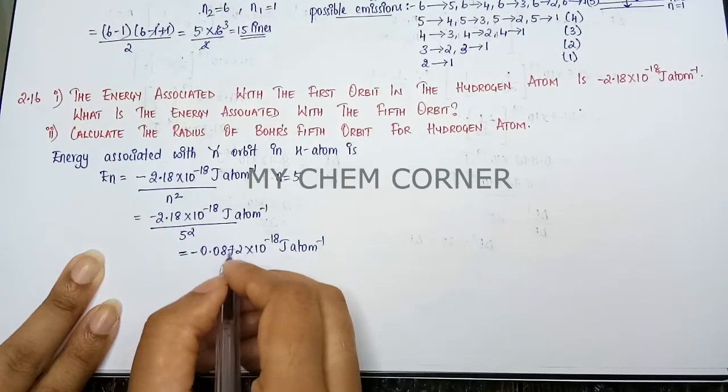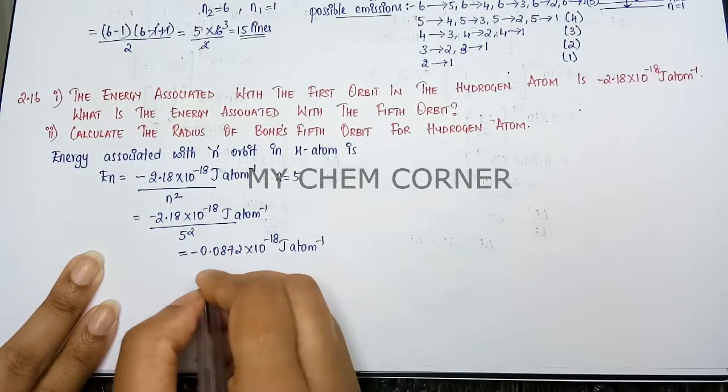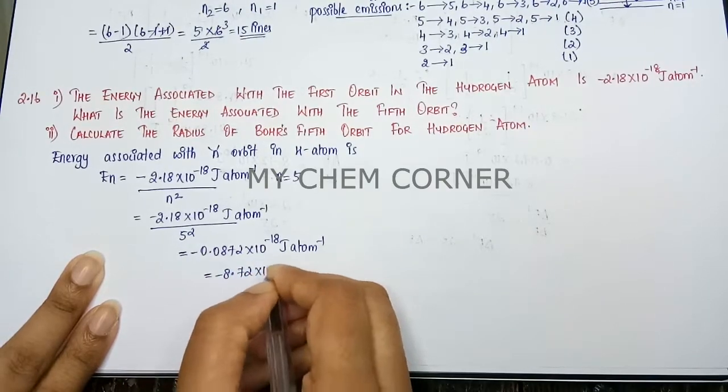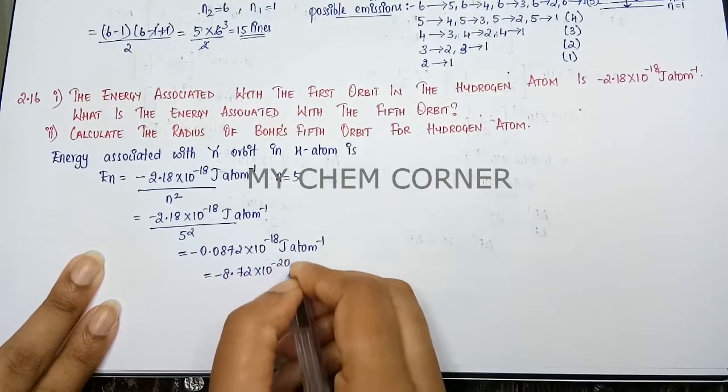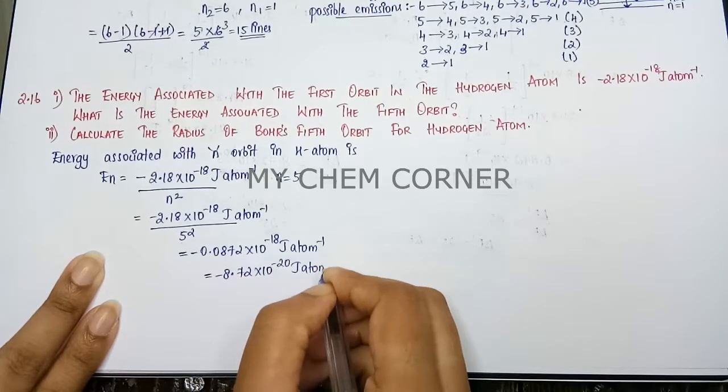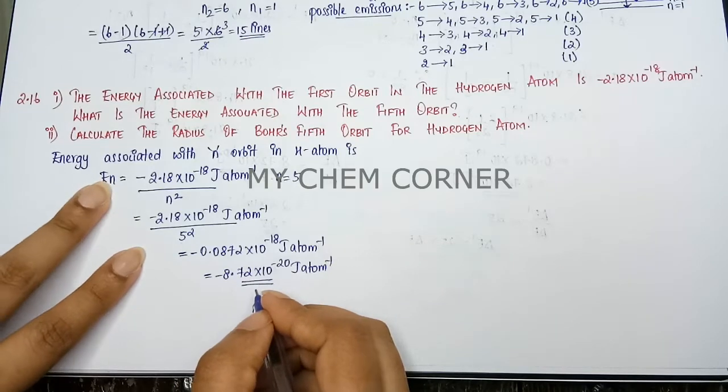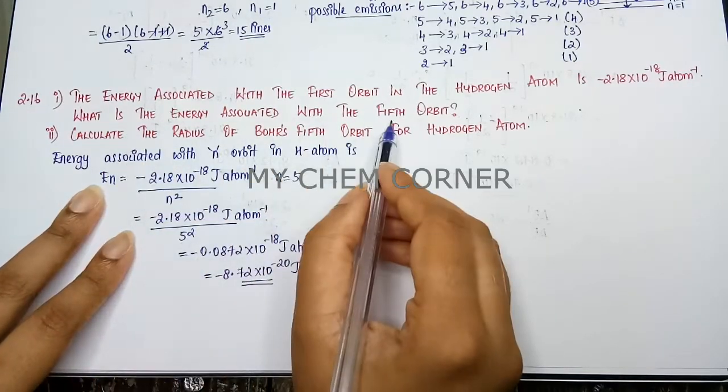Shift the decimal to this side for two places. This will be minus 8.72 times 10 to the power minus 20 joule per atom. So this is going to be the energy required for the fifth orbit. So that answers our first question.